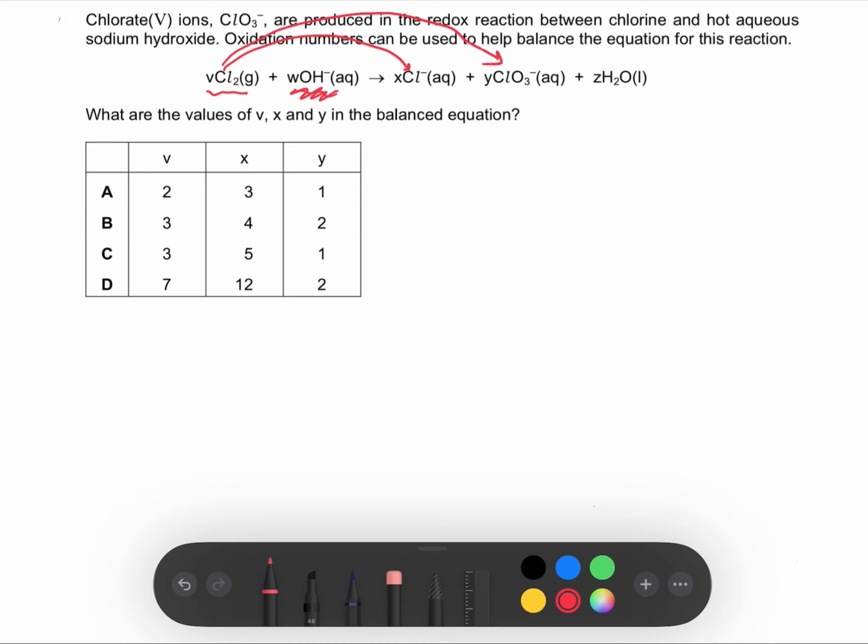You have to split this into two equations. Let's start with Cl₂ to Cl⁻. We have half equations but we have to balance the atoms and the charges. The number of chlorine atoms are not equal, so we have to multiply this by two in order to have the same number of atoms.